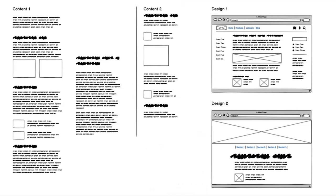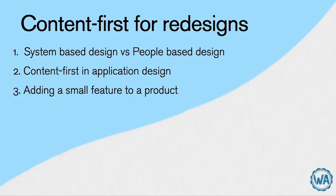If you start a project content first and you feel like you have a lot to say, write it all out, gather all the images, really work on that content, and then start designing it. Maybe you end up with a really full website. What's great about starting content first is you can go back and edit down all of that content. You get to a simpler, more minimalist website that's probably easier to use. But if you didn't start content first, you may be trying to cram content one into design two, and it's just not going to work — it'll be time-consuming and difficult.